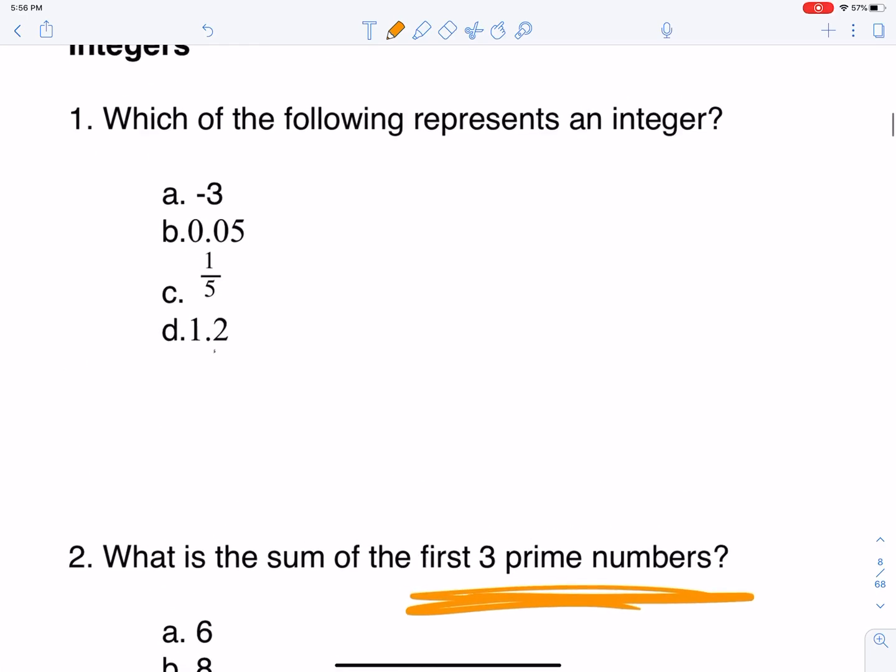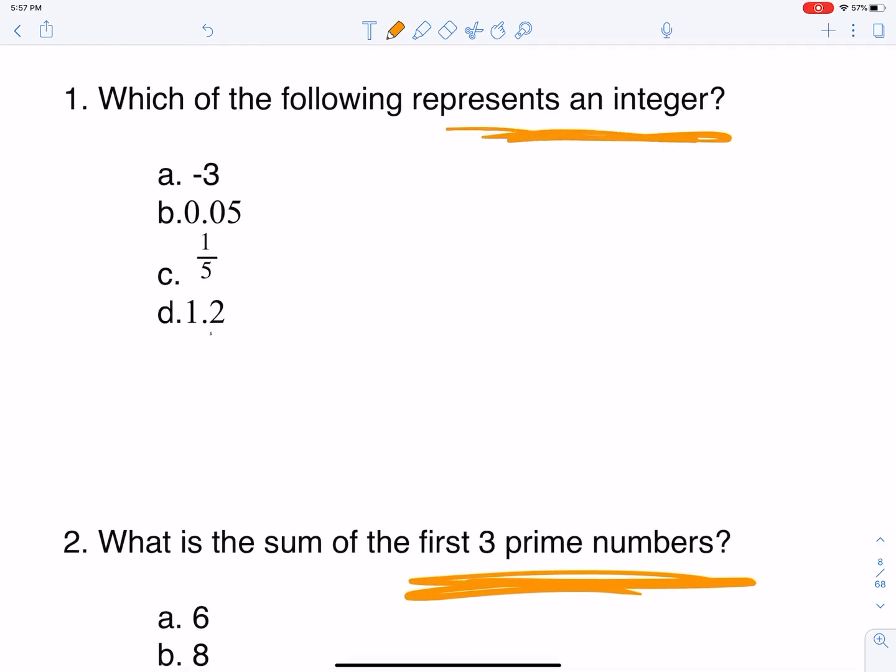So let's take a look at this first one. Which of the following represents an integer? Well, this may be straightforward, but you should know, particularly for ACT and for SAT, that an integer is just a whole number. It can be positive, it can be negative, it just can't be a fraction or decimal. So if you look at these answer choices, the only one that is an integer is answer choice A.